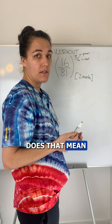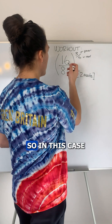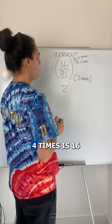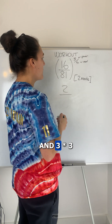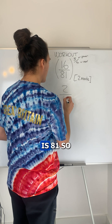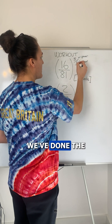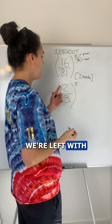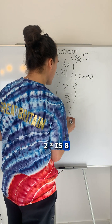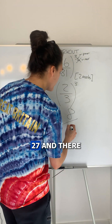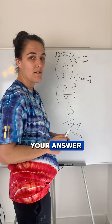What does that mean? What multiplied by itself four times makes each of these numbers? In this case, two times two four times is 16, and three times three four times is 81. So we've done the fourth root and we're left with two cubed and three cubed. Two cubed is eight, three cubed is 27, and there you have your answer: 8 over 27.